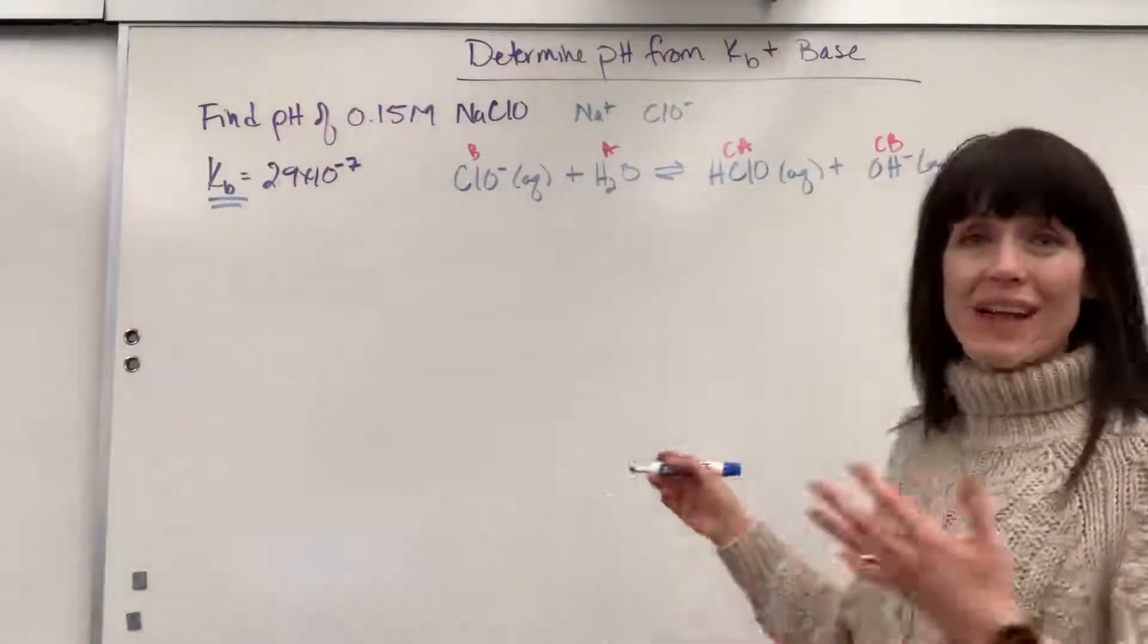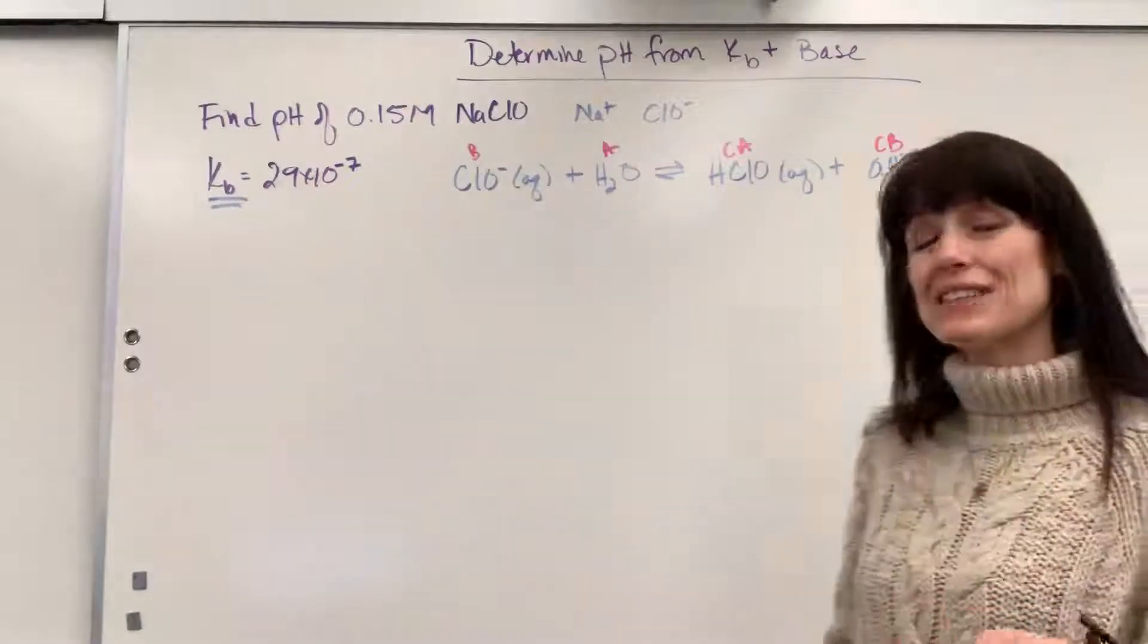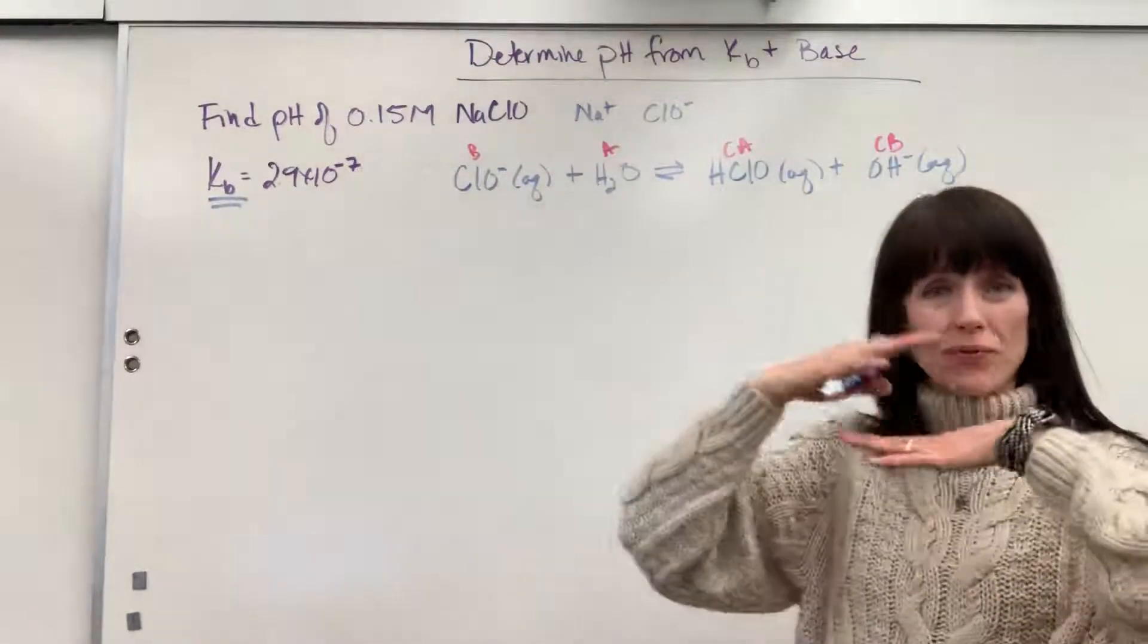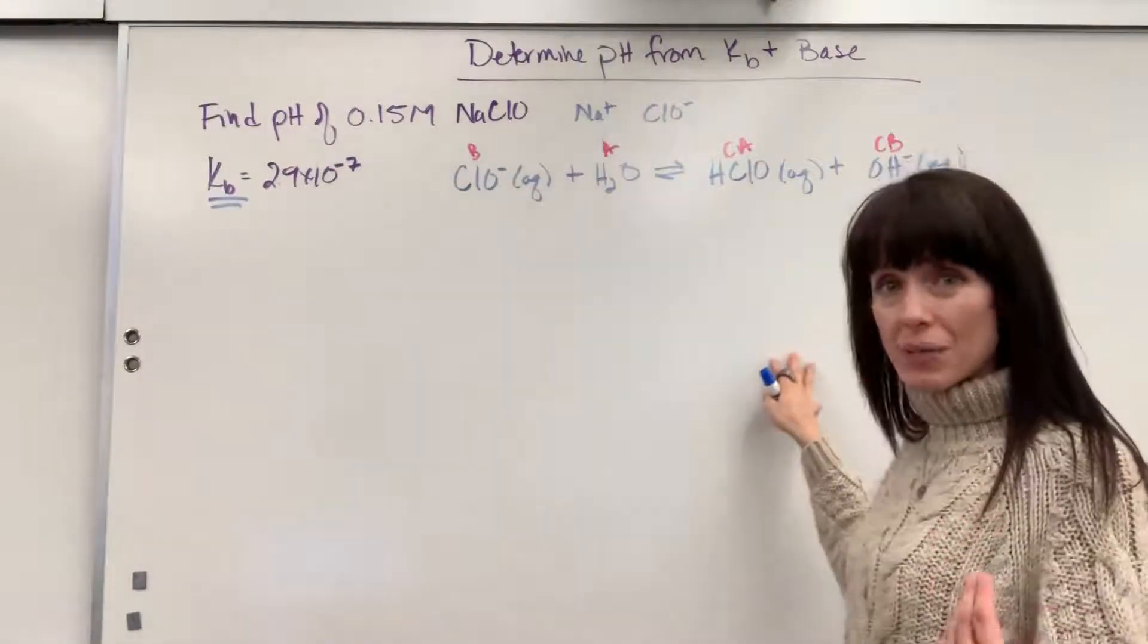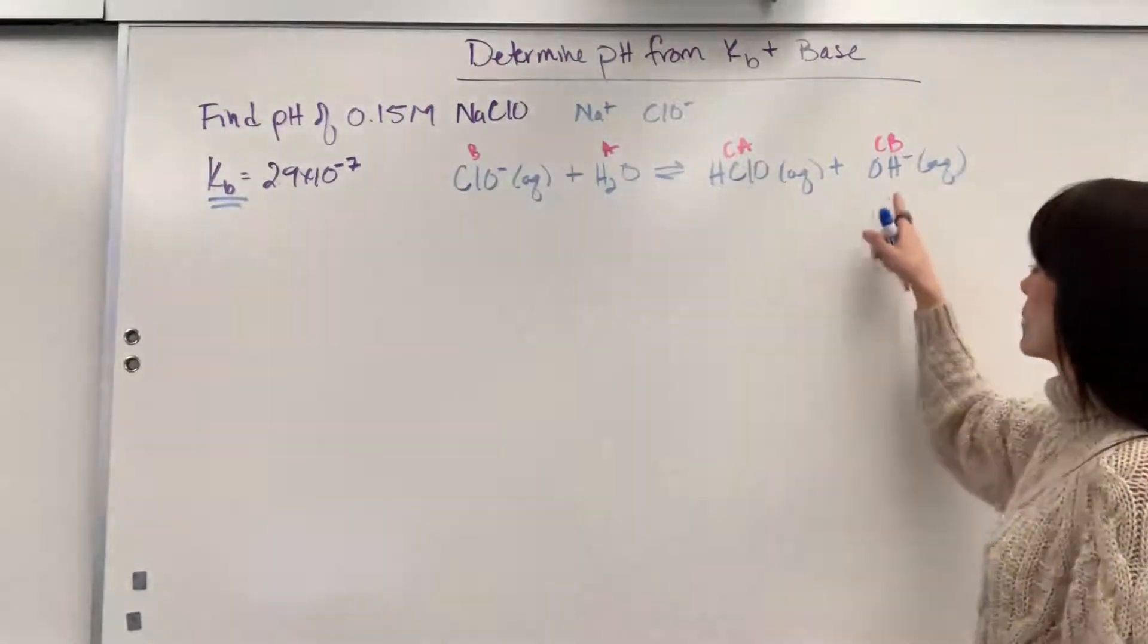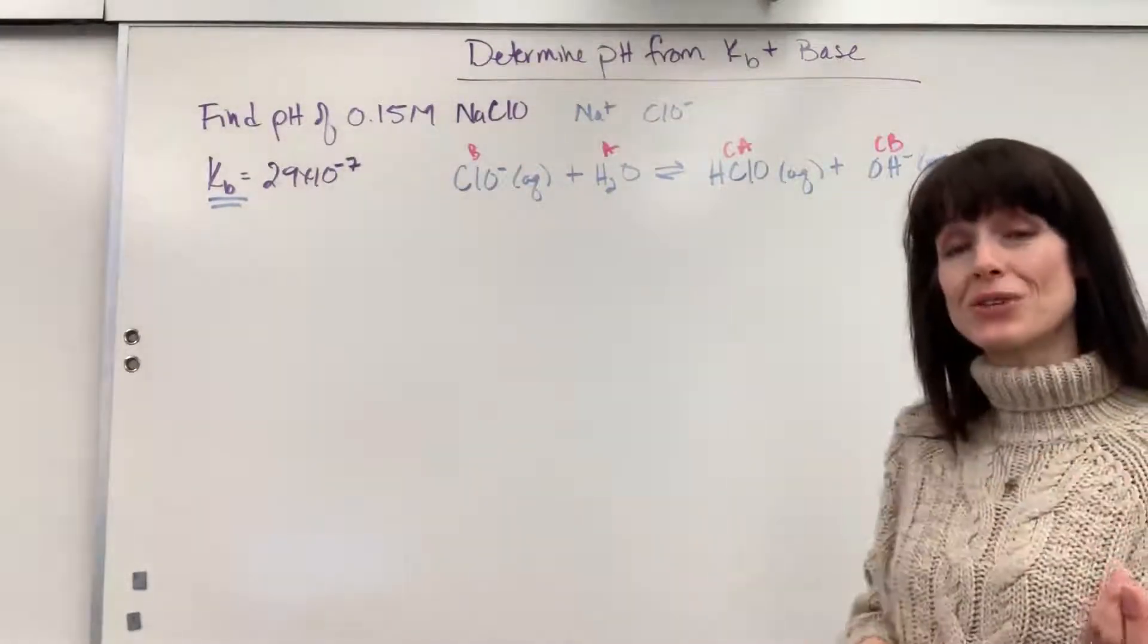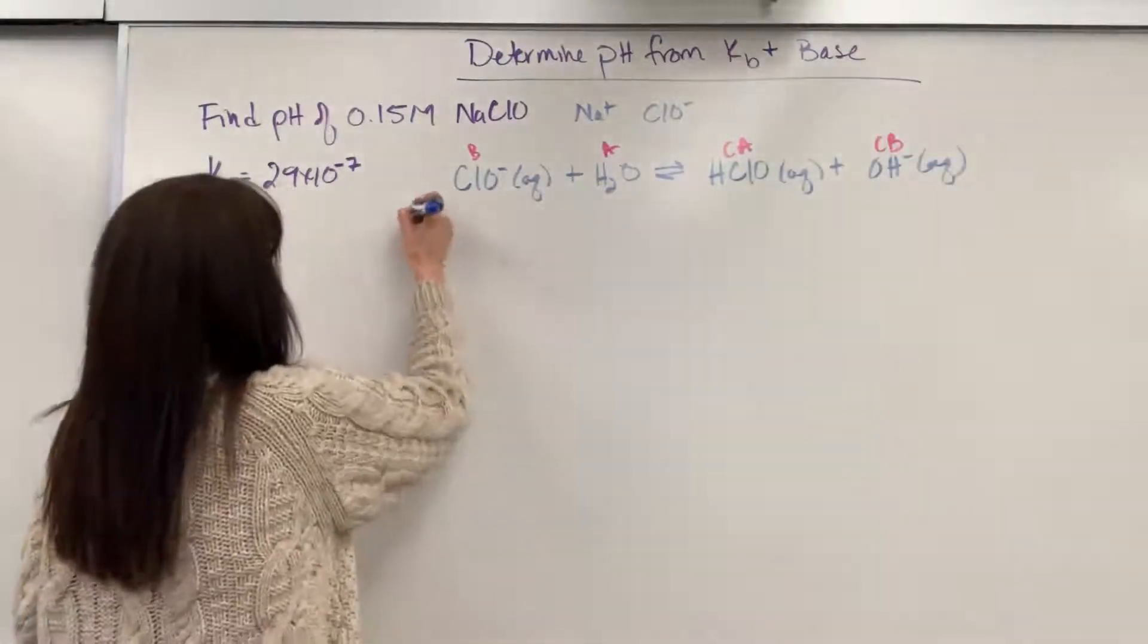It is a common mistake that students will make. If you have a base plus water, you find Kb. You're not going to be looking up Ka for the hypochlorous acid. You look up the Kb. It's whatever is next to the water. That's what you look up. Now let's go ahead and do our ICE table. I want to find pH, which means I need to find the concentrations at equilibrium when we're set perfect, equal rates.